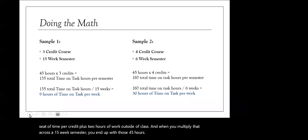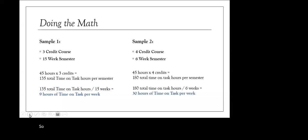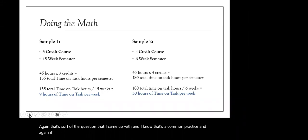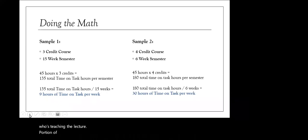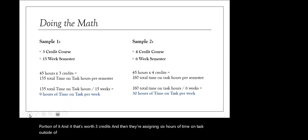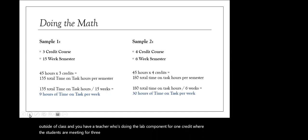For a three-hour lab, is it reasonable to have students do work like write lab reports or study outside of the lab? That's a common practice. If the lecture instructor is the same as the lab instructor and they're balancing the total time on task, it works out fine. But if you have an instructor teaching the lecture portion worth three credits assigning six hours of time on task outside of class, and a teacher doing the lab component for one credit where students are meeting for three hours plus homework outside of class, then you're actually above time on task for that course.